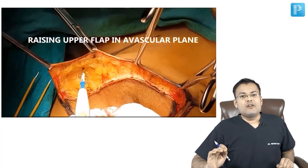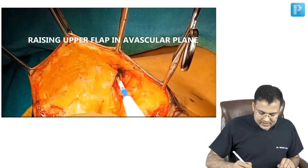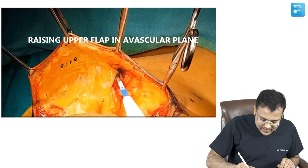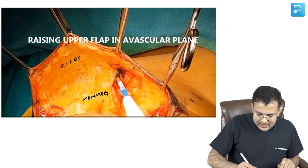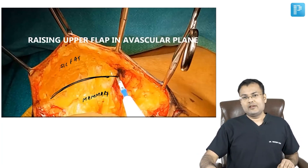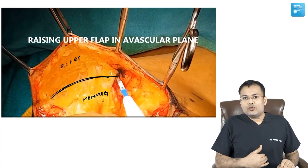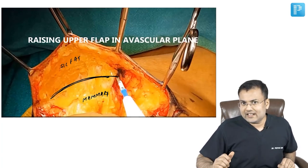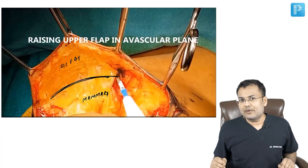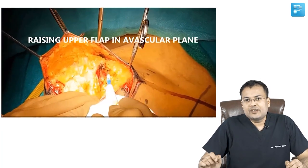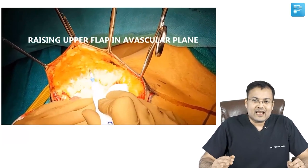Here you can see we are raising the upper flap in the avascular plane. This is the subcutaneous fat, this is the mammary fat, and this is the avascular plane. The flap is raised above till the clavicle and below till the upper part of the rectus sheath. Sharp dissection is being performed in the avascular plane located between subcutaneous fat and mammary fat.